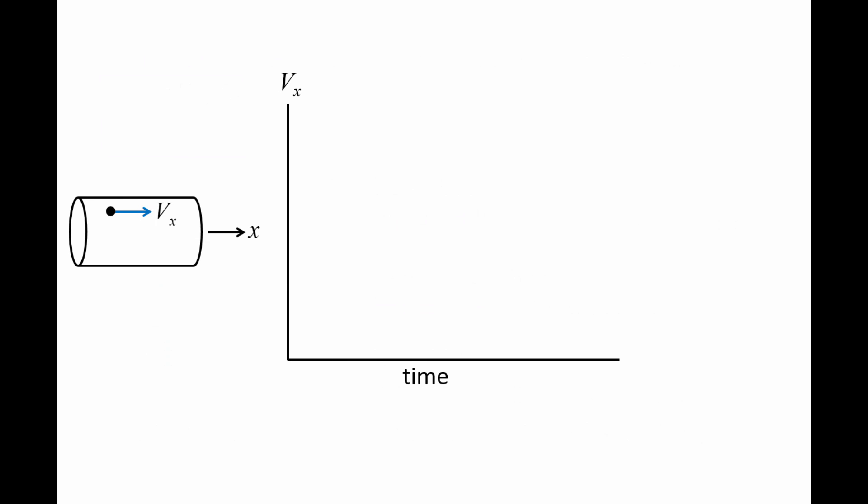We can visualize the different flow regimes another way by examining the axial velocity component, Vx, at a single location in the pipe as a function of time.